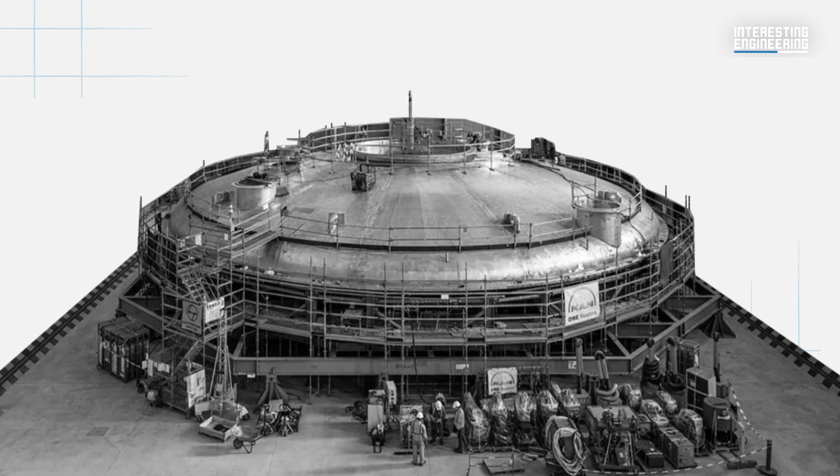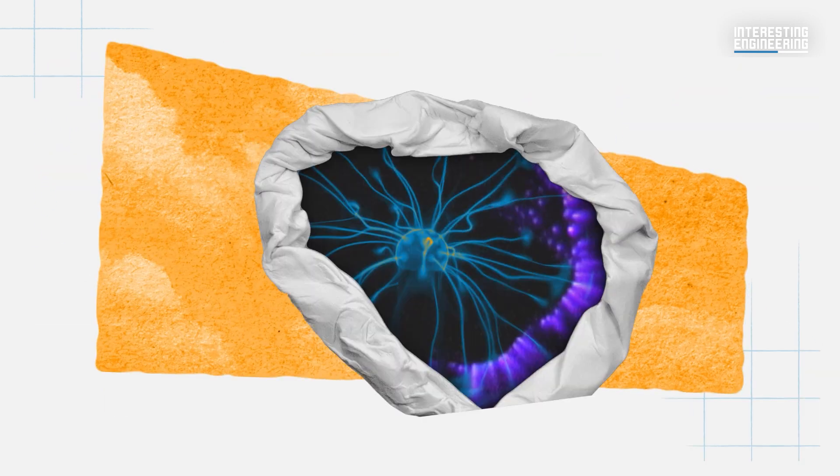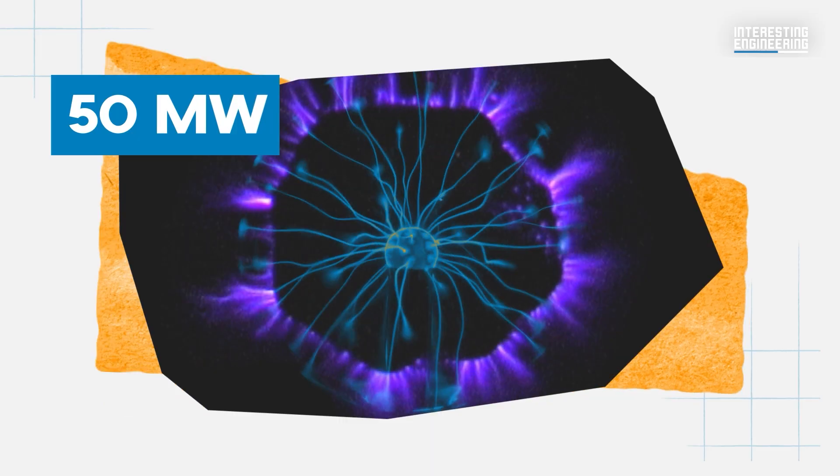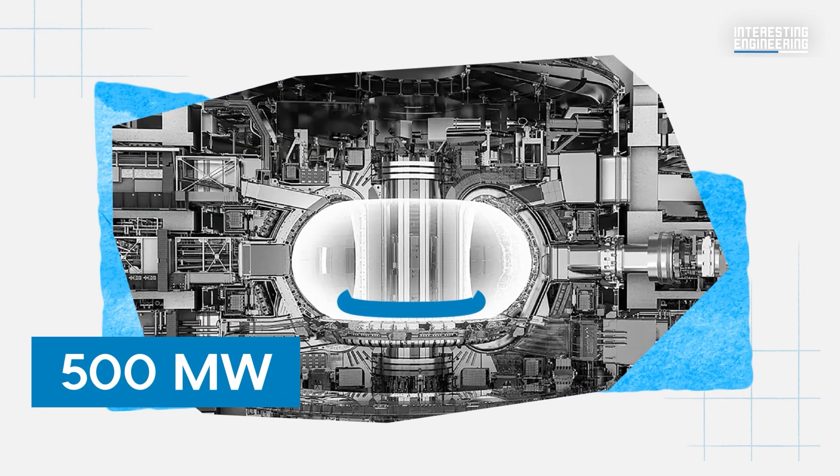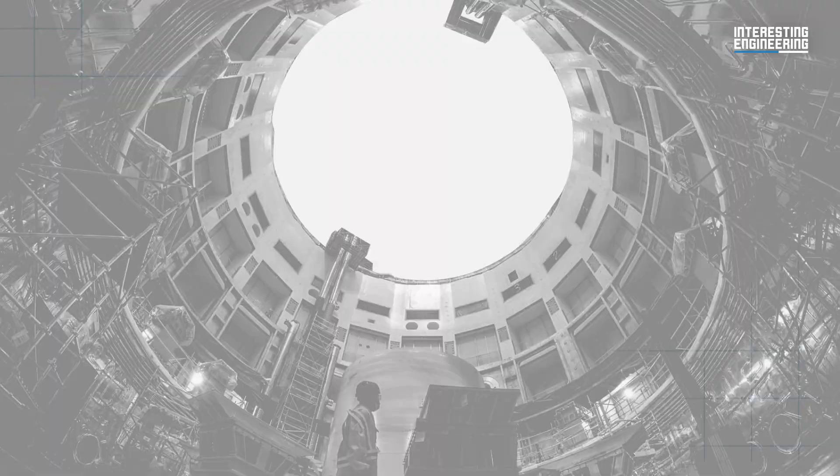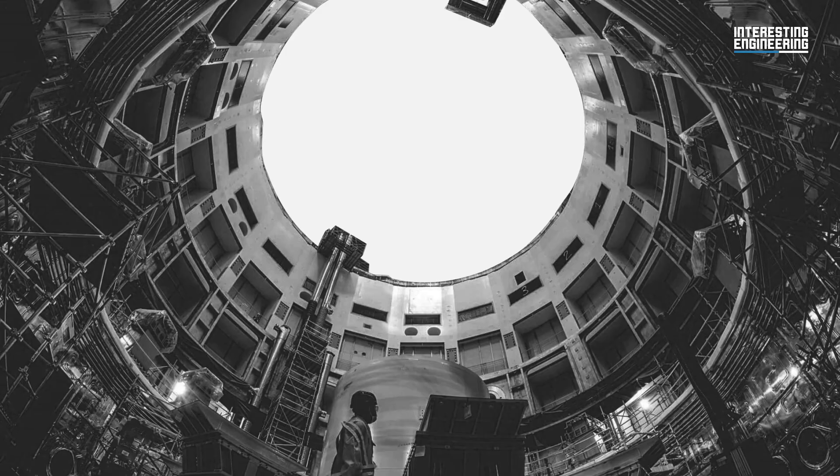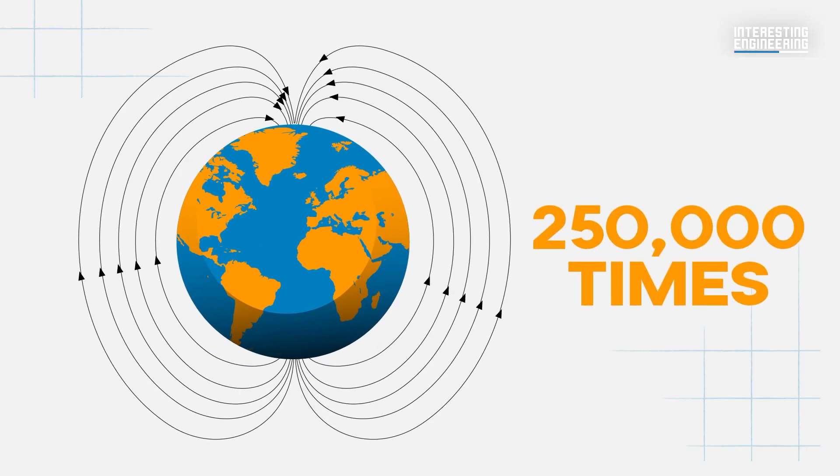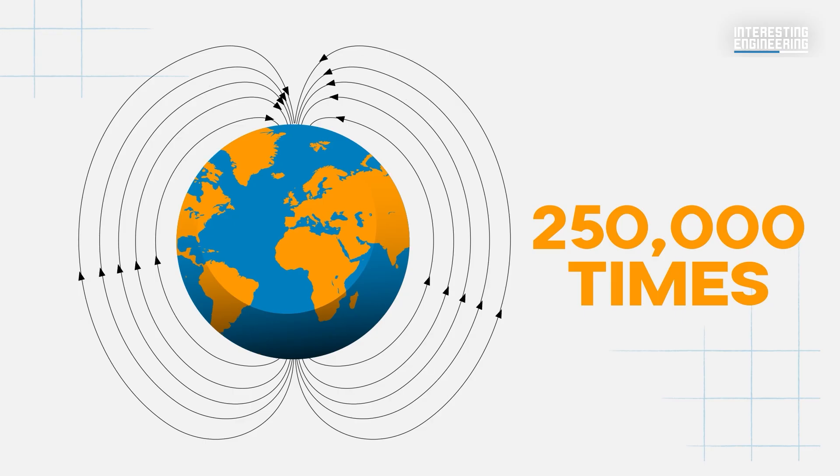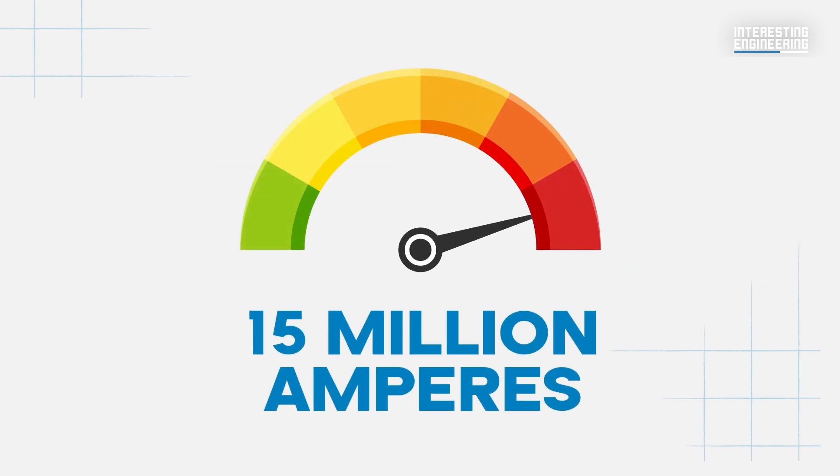When ready, the facility is designed to use 300 megawatts of electrical power to make the plasma absorb 50 megawatts of heat and generate 500 megawatts of heat post-fusion for 400 to 600 seconds. During these operations, ITER reactor will produce magnetic energy of 41 gigajoules, which will be 250,000 times greater than that of the Earth. The plasma current will also peak at 15 million amperes, setting a record for fusion reactors.